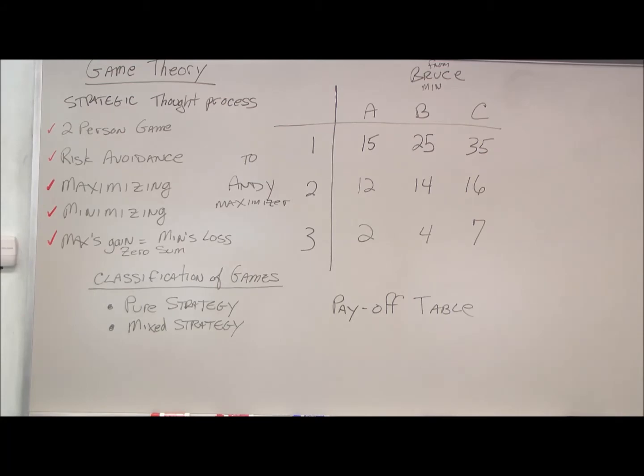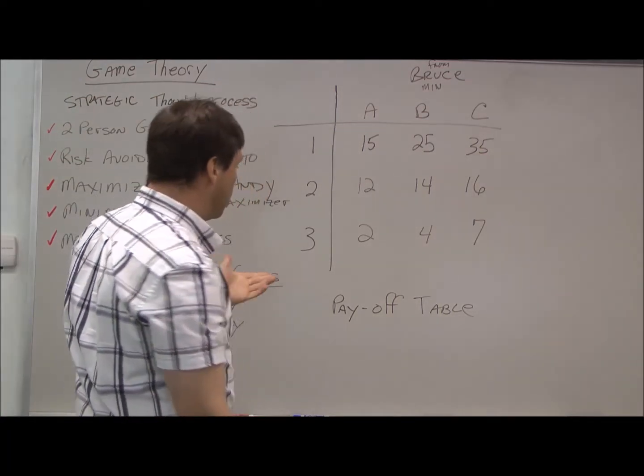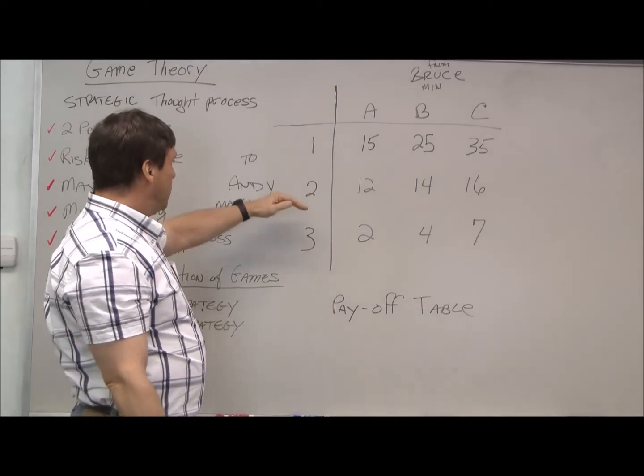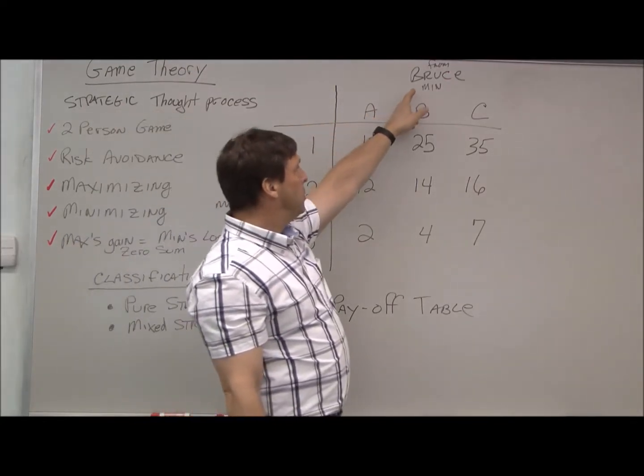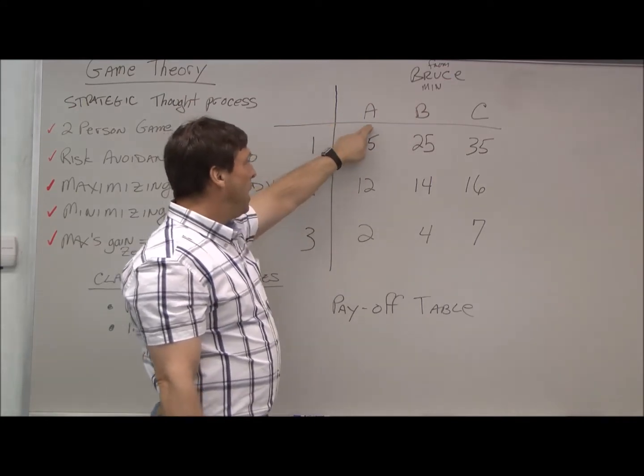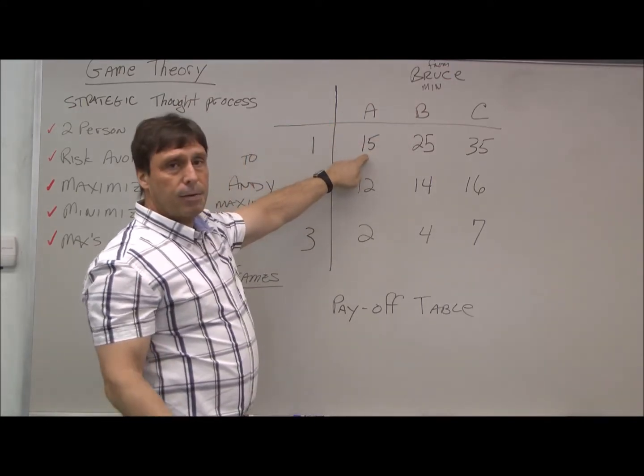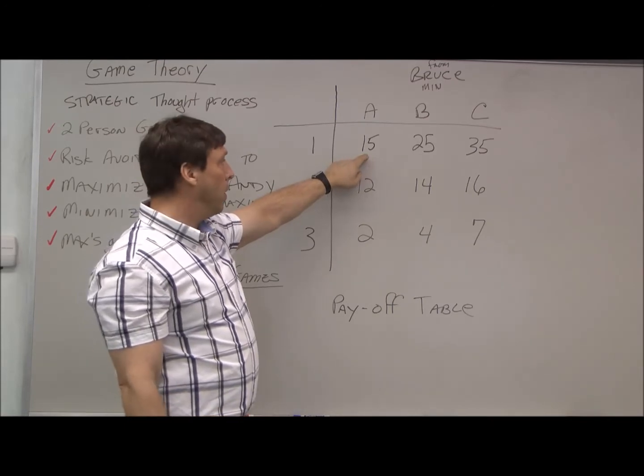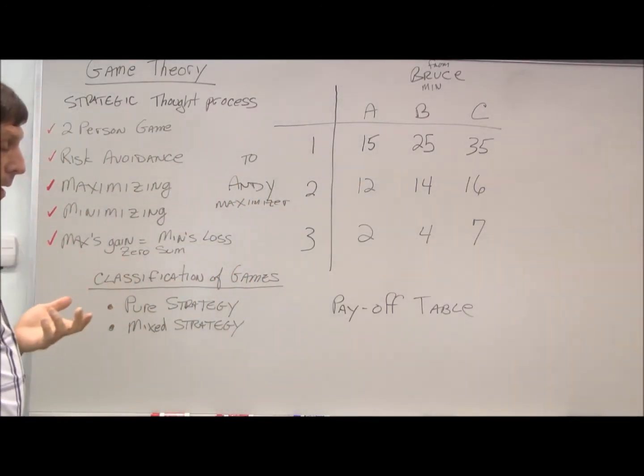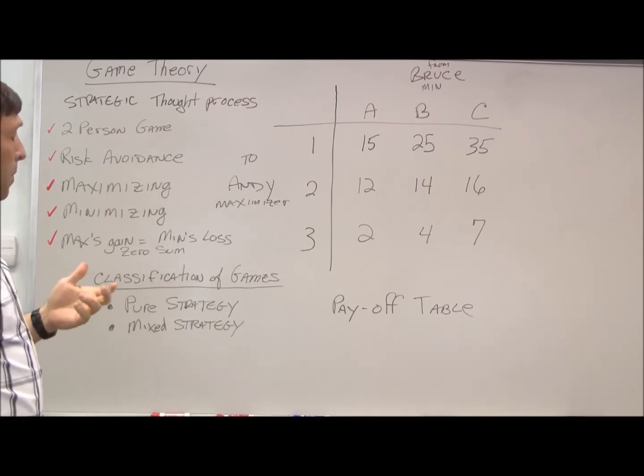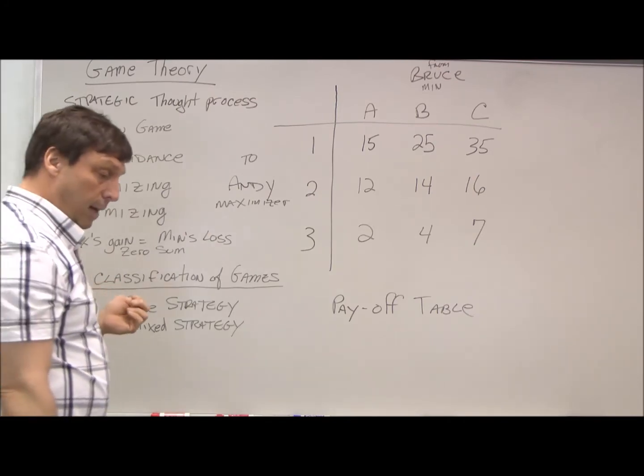To give you an idea of how this works, this is the payoff table. So if Andy chooses strategy one and Bruce chooses strategy A, the payoff from this game would be the intersection of A and one, or 15 at this point. So Andy would gain $15 and Bruce would lose $15.